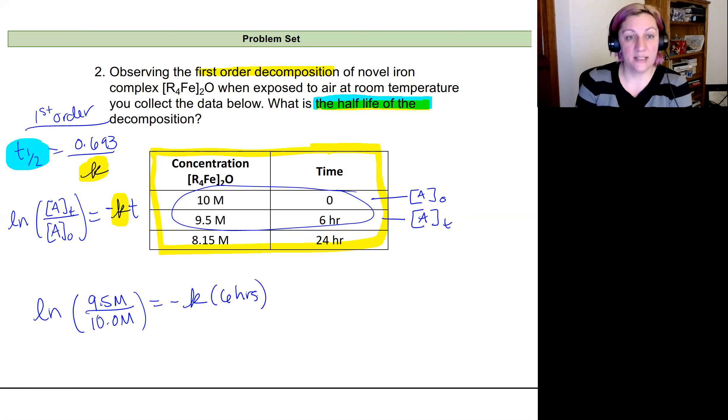So I can plug this into my calculator and rearrange and I'll solve for a K value that's equal to 0.00855 inverse hours.